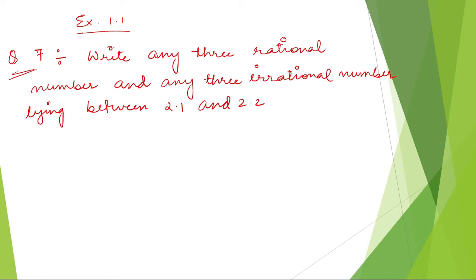I hope the question is clear to you. Now we are going to find out the answer. We are going to find any three rational and irrational numbers. So solution, let us find out three rational numbers between 2.1 and 2.2.